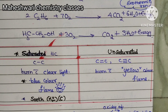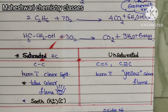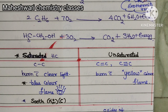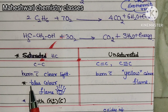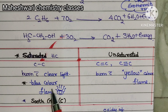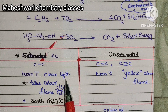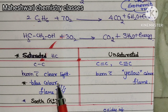For combustion reactions, there is an important variation between saturated and unsaturated hydrocarbons. Saturated hydrocarbons burn with a clear light blue color flame.